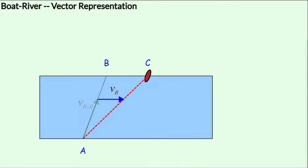Now we have two vectors: the velocity of the boat with respect to the river, and the velocity of the river, which is with respect to the ground.